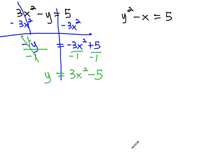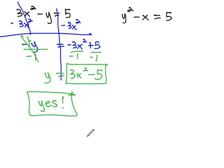Notice there is only one thing that y equals. Y equals whatever 3x squared minus 5 is. Because that's the only thing that y equals, we will say yes, this is a function, because there's only one thing that y equals.